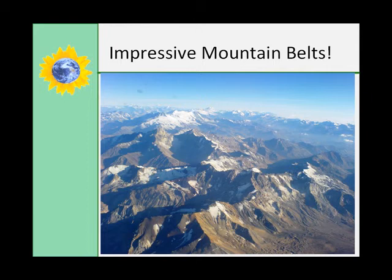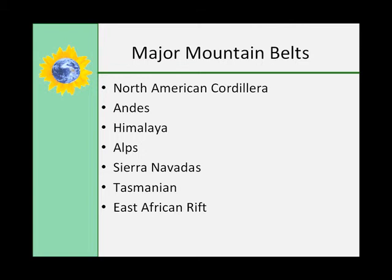Some of the major mountain belts: the most impressive occur where plates collide. The Cordillaran Mountains of western North America and the Andes of western South America are the result of oceanic-continental plate collisions. The Himalayas are a result of continent-continent collision — the Indian and Asian tectonic plates smashing into each other. Some transform plate boundaries can also result in impressive mountains, like the Sierra Nevadas in Southern California and the Tasman Mountains, also called the Southern Alps, in New Zealand.